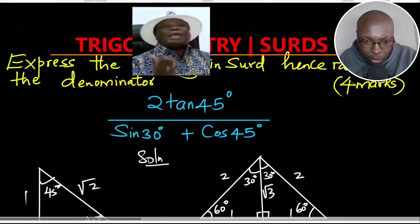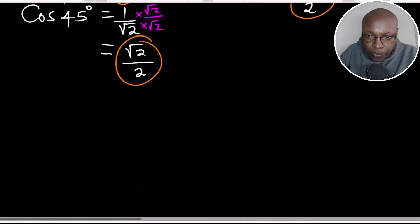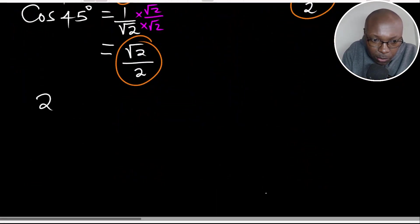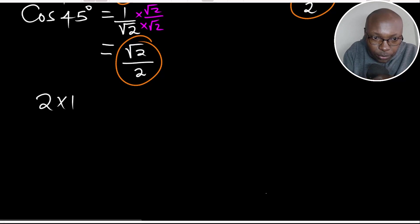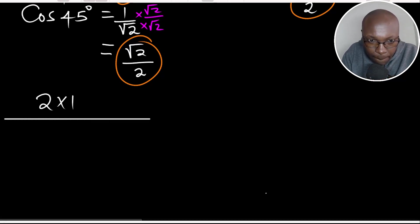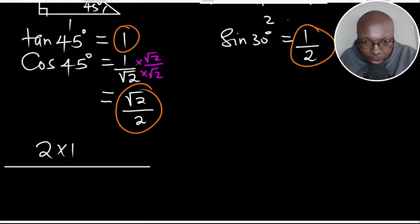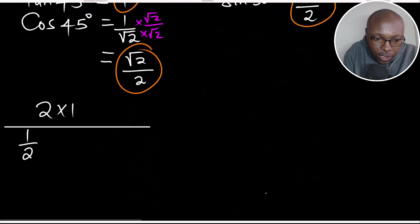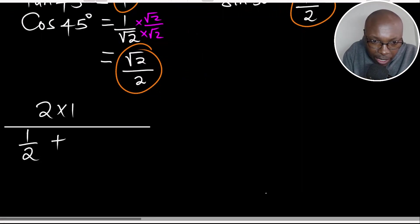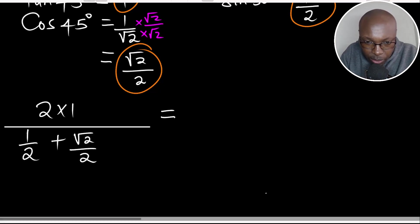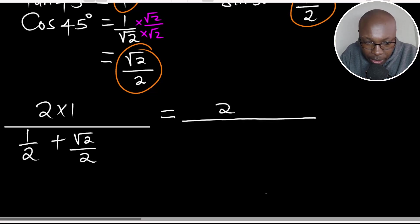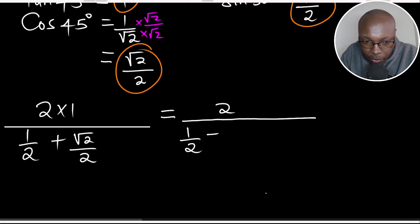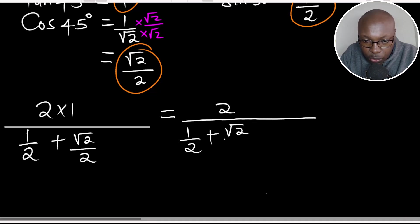We substitute into our expression. Two times tangent of 45 equals 2 multiplied by 1, which is 2. For the denominator, sine of 30 is one half, plus cosine of 45 which is root 2 divided by 2. So the expression becomes 2 divided by (one half plus root 2 over 2).